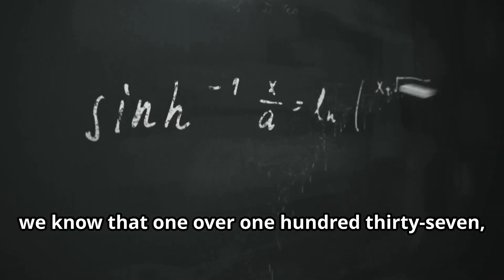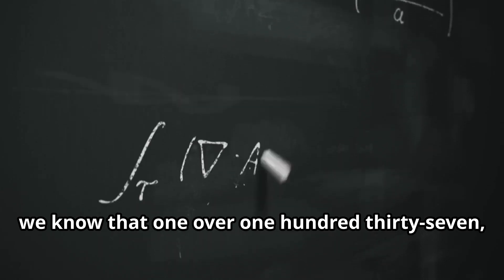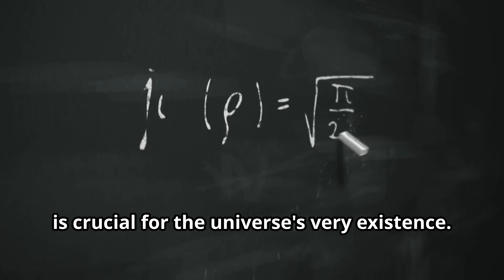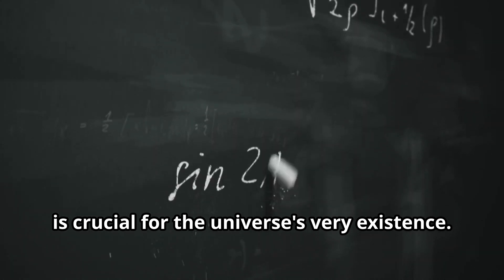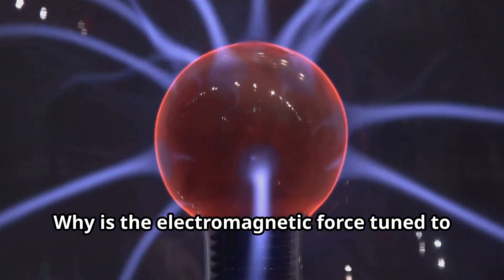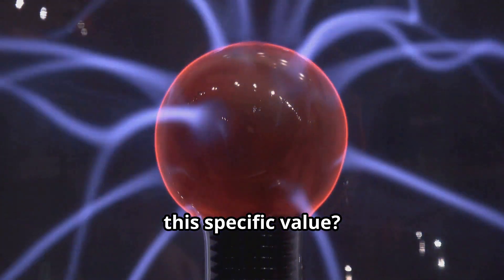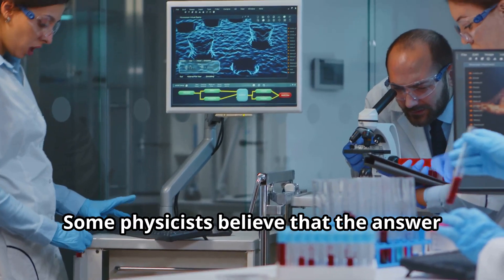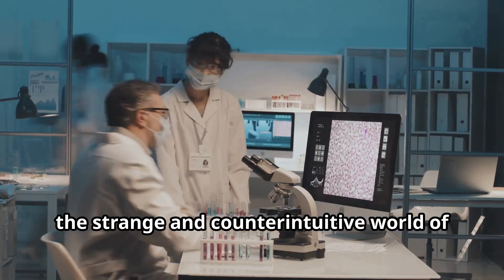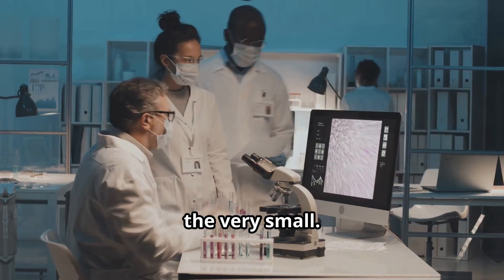So we know that 1 over 137, or the fine structure constant, is crucial for the universe's very existence. But here's the real head-scratcher. Why this number? Why is the electromagnetic force tuned to this specific value? Some physicists believe that the answer might lie in the realm of quantum mechanics, the strange and counterintuitive world of the very small.